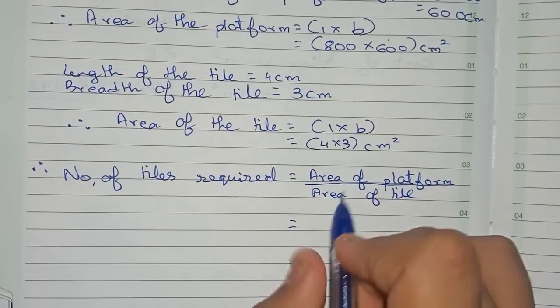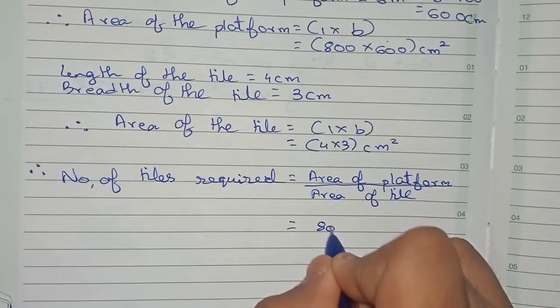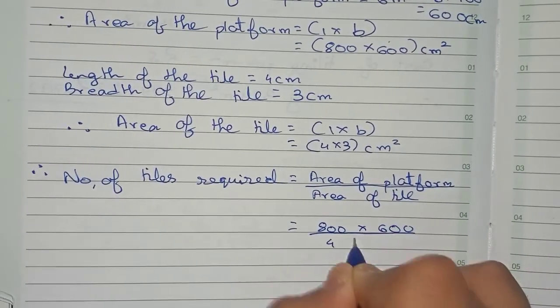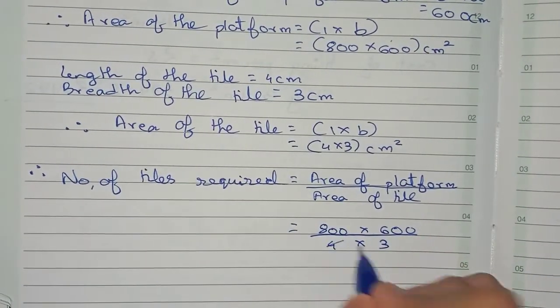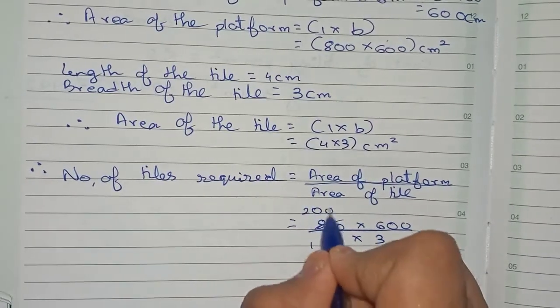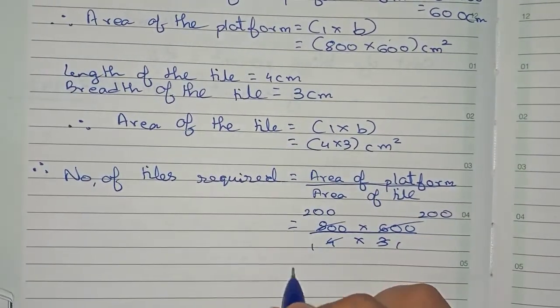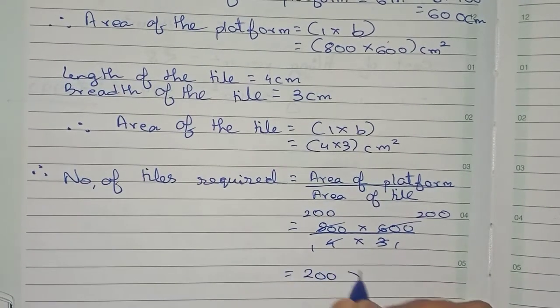The area of platform is 800 × 600 divided by the area of tile, which is 4 × 3. You divide 800 by 4 first, which becomes 200, and similarly 600 by 3, which is also 200. So it equals 200 × 200.